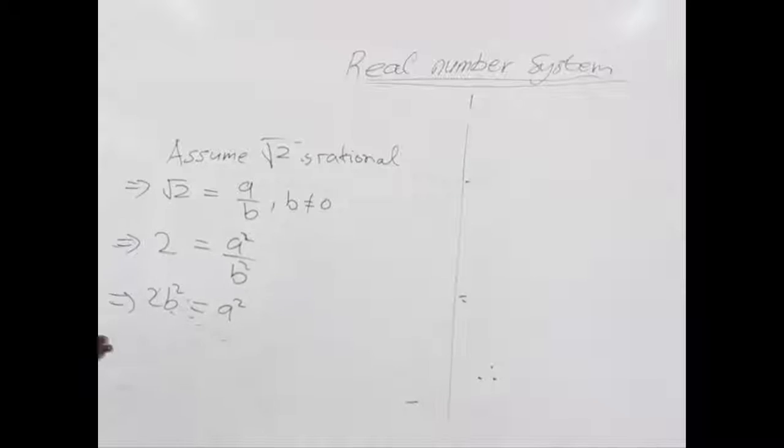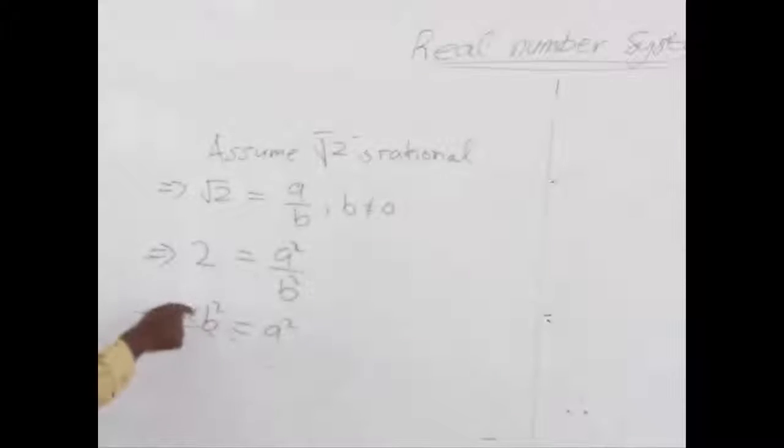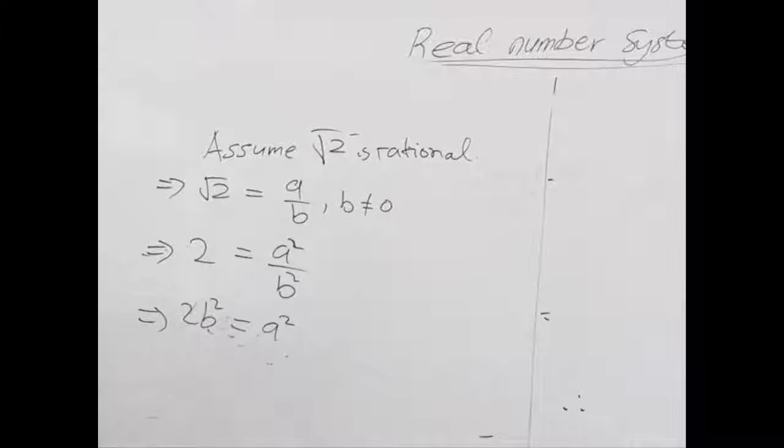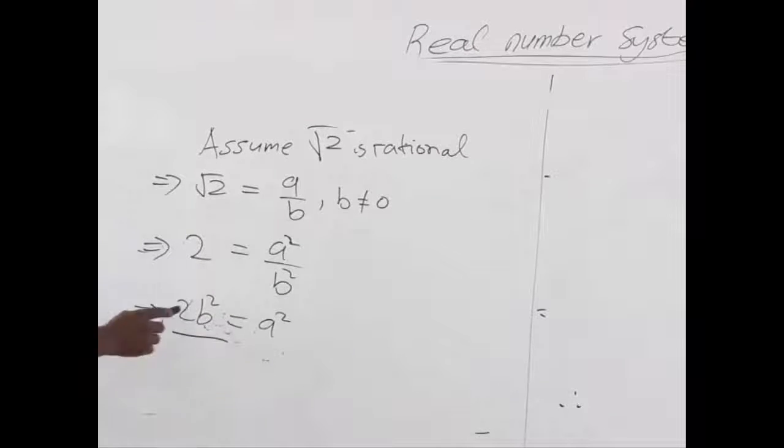We are going to find whether a and b are even or odd. But we can see clearly here that 2b squared, because of this 2, makes the whole expression even. Because 2 times any number will give you an even answer. So we can say that b squared is even.